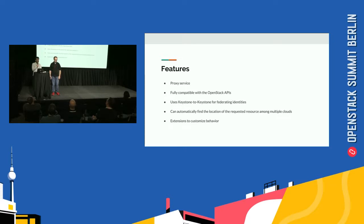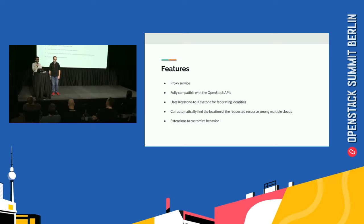It's a proxy service, fully compatible with the OpenStack API — we haven't made any changes to any of the OpenStack APIs, it just sits on top of everything. It uses Keystone-to-Keystone. And it can automatically find the location of requested resources among multiple clouds by doing a broadcast search, then caching the location of the resources so it doesn't have to look for them again. It's also possible to build extensions to customize behavior.